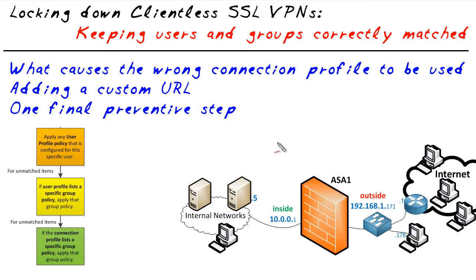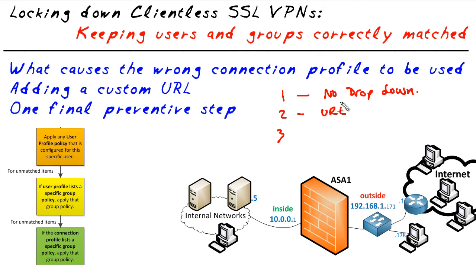To solve this problem, we're going to do three basic things. Number one, we're going to remove the drop-down list so the user doesn't have the choice. Number two, we're going to give him a custom URL that's just for his engineering group. Number three, we're going to lock him down so that if he somehow gets somebody else's URL or accidentally sees a drop-down, he will not be able to log in unless he comes in on the correct connection profile. Let's implement those three things right now.